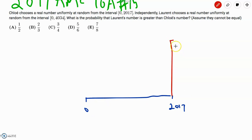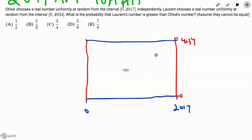And now, Laurent picks a number from 0-4034. And it can be any number in this red range, and this will be Laurent's number. So we have this sort of axis, and we can sort of complete this just so that our calculations will be easier.